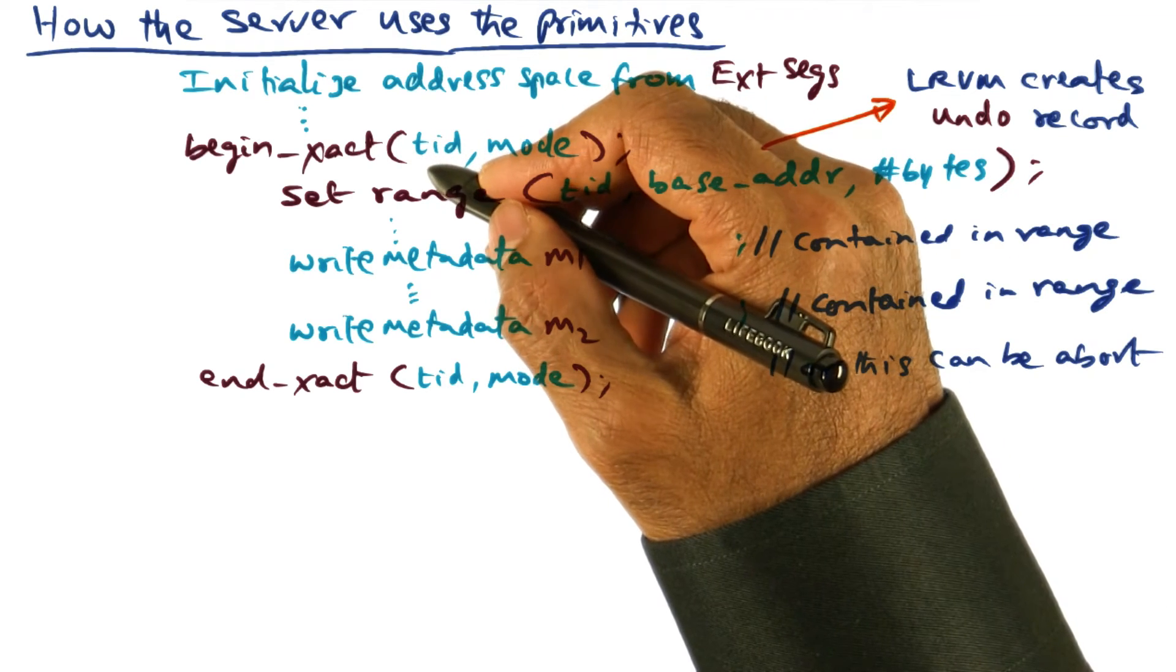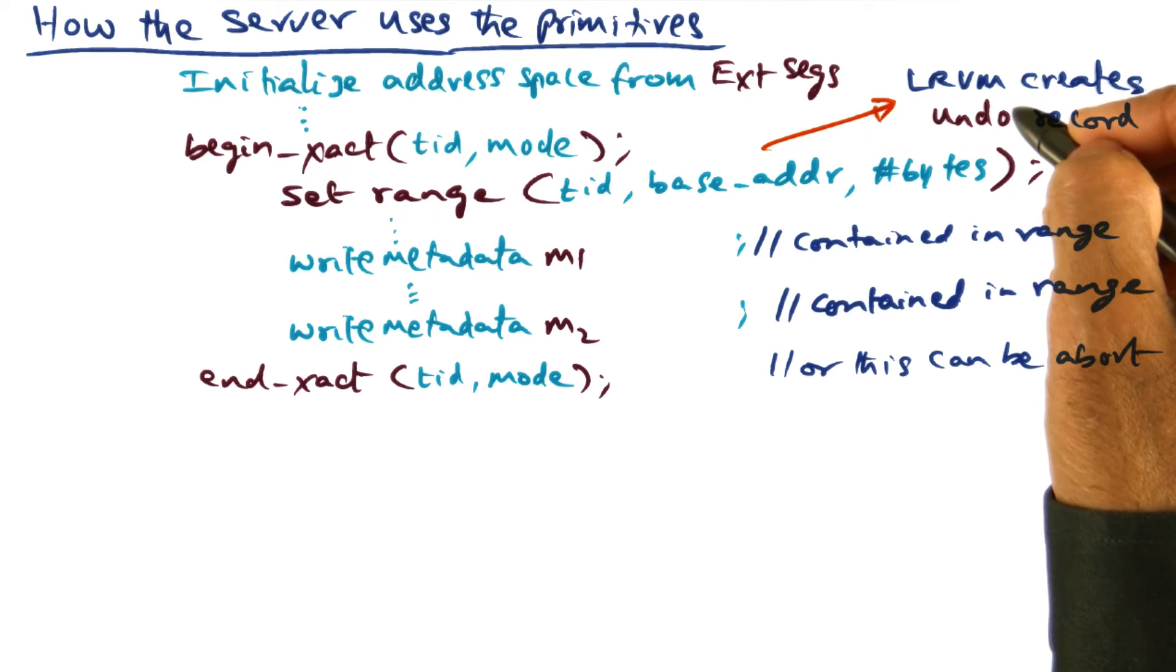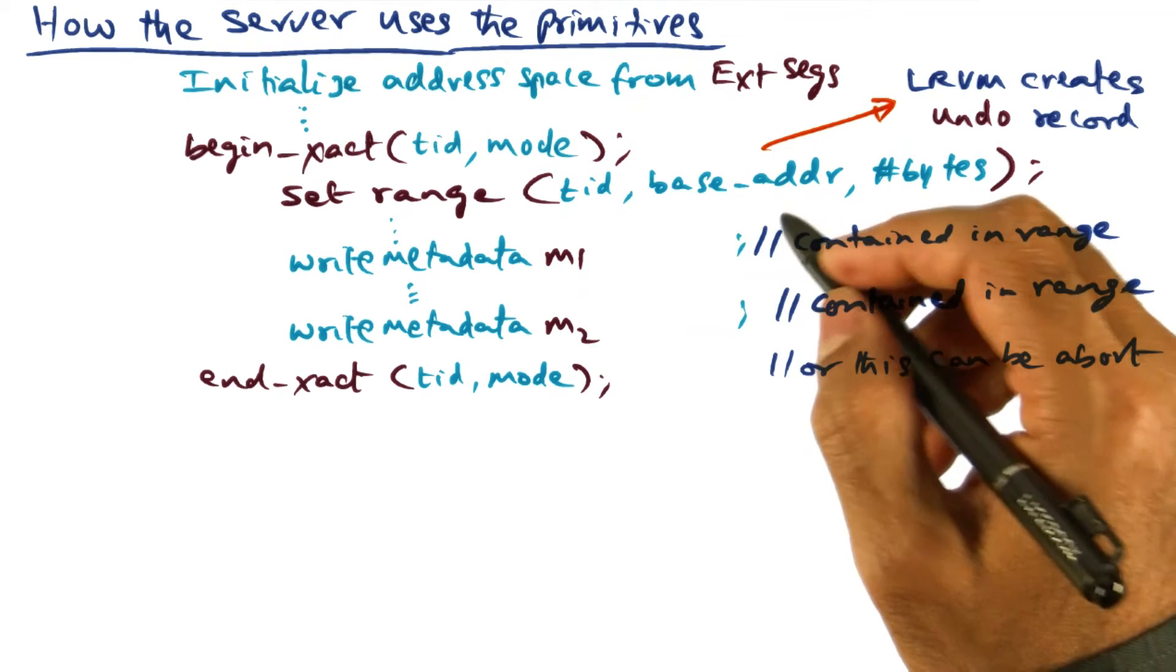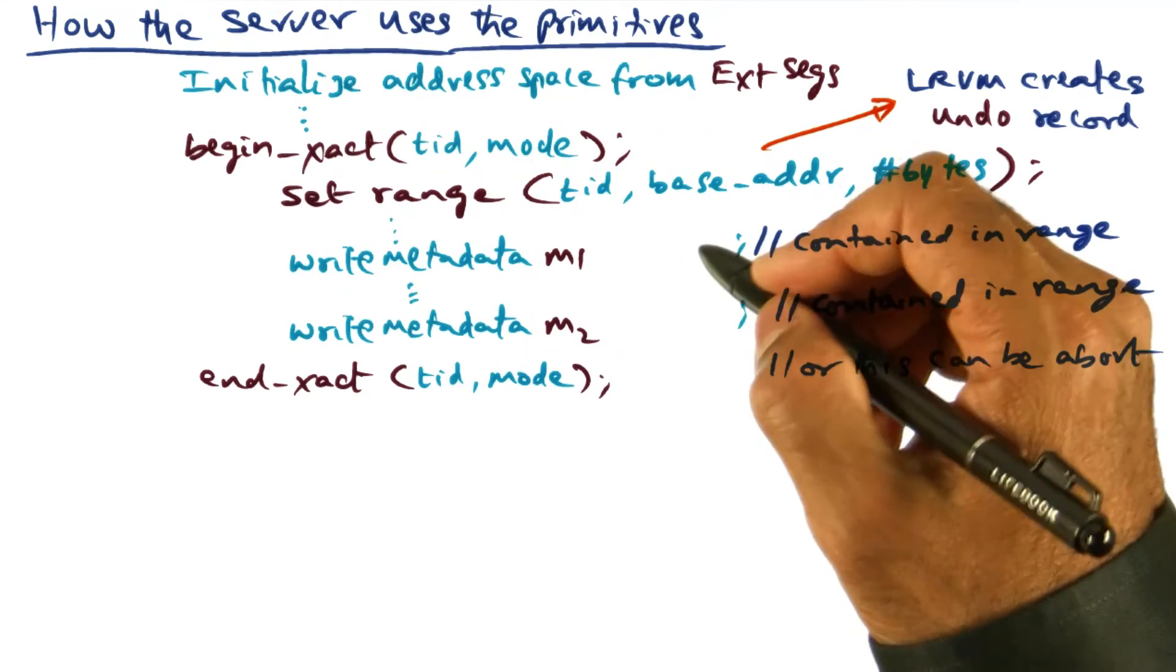And in this case, if this transaction is never going to abort, then there is no reason to create an undo record. So that's the idea behind the no restore mode in the begin transaction.